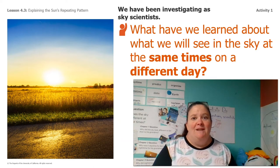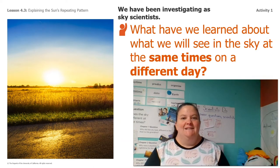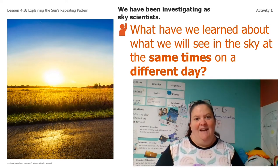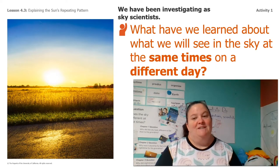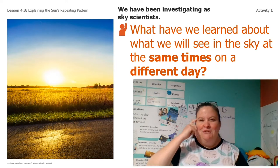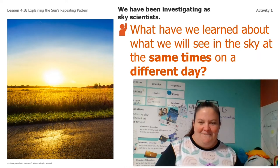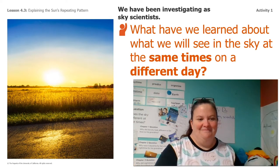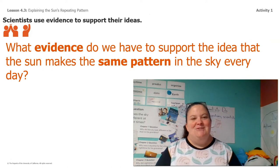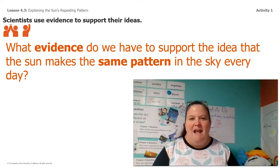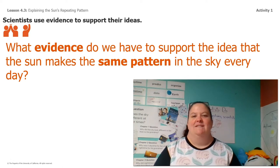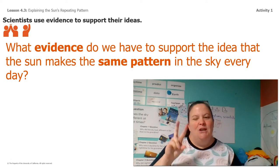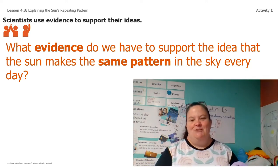We have been investigating for a long time as sky scientists. What have we learned about what we'll see in the sky at the same time on a different day? Can you guys think about what we've learned so far? Go ahead and shout it out. Remember, scientists use evidence to support their ideas. So what evidence do we have to support the idea that the sun makes the same pattern in the sky every day? There were two big pieces of evidence from last time. Do you guys remember what they were?